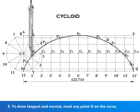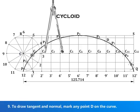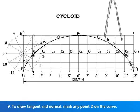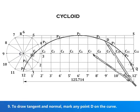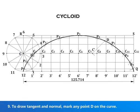To draw tangent and normal, mark any point D on the curve. With center D and radius equal to 25 mm, mark C' on the line C, C12.